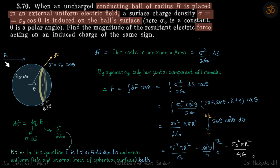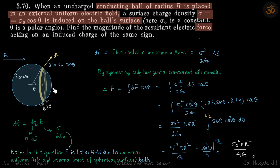The electric field E here is the total field — due to the external uniform field and the rest of the spherical surface combined. Whatever charge distribution exists in the rest of the sphere, plus the external electric field, their net effect equals sigma / 2ε, which causes the force on this ring element. It is already taken into account, so the net force on the ring is simply the pressure formula times area.